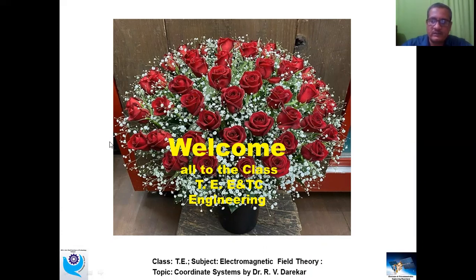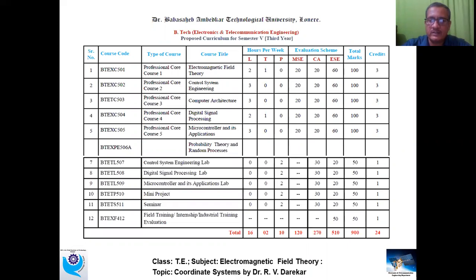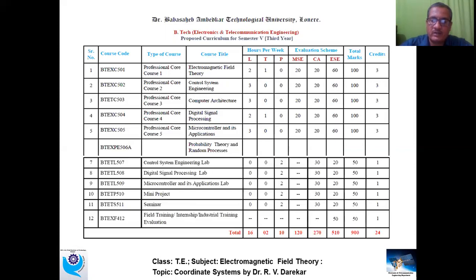First of all let us have an introduction to the syllabus structure. As per the semester pattern for Semester 5, there are six different subjects: Electromagnetic Field Theory, Control System Engineering, Computer Architecture, Digital Signal Processing, Microcontroller and Applications, and one elective subject. In parallel we have to continue with laboratory experiments for Control System Engineering, Digital Signal Processing, and Microcontroller and its Application lab.